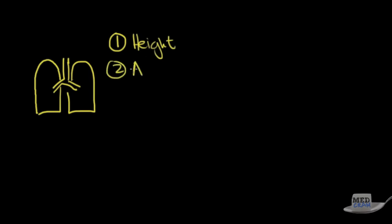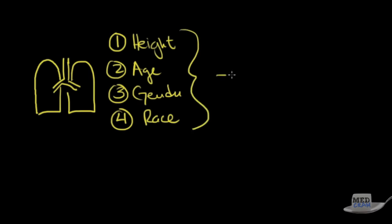The key I want you to get out of this lecture is specifically that the lungs are an organ of the body that can change in size, and you can get different values for different people with different distributions based on the four criteria: height, age, gender, and race. Once you take an individual and plug those numbers into the computer, they will give you values.